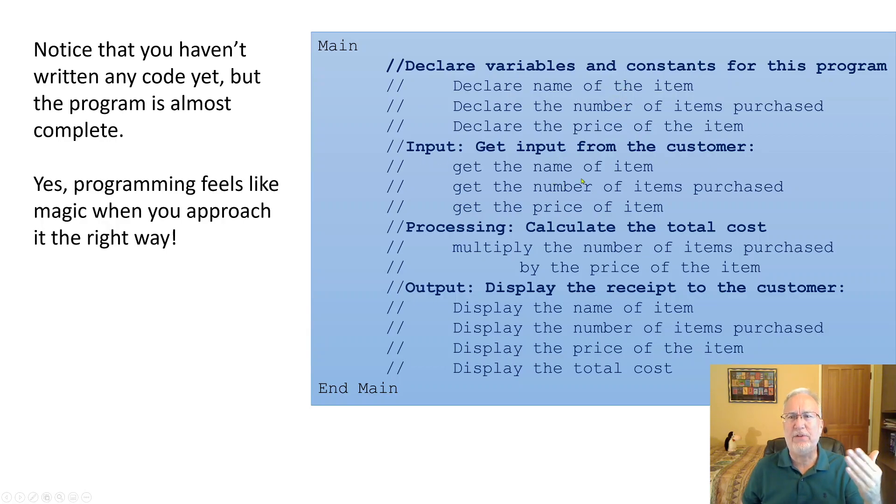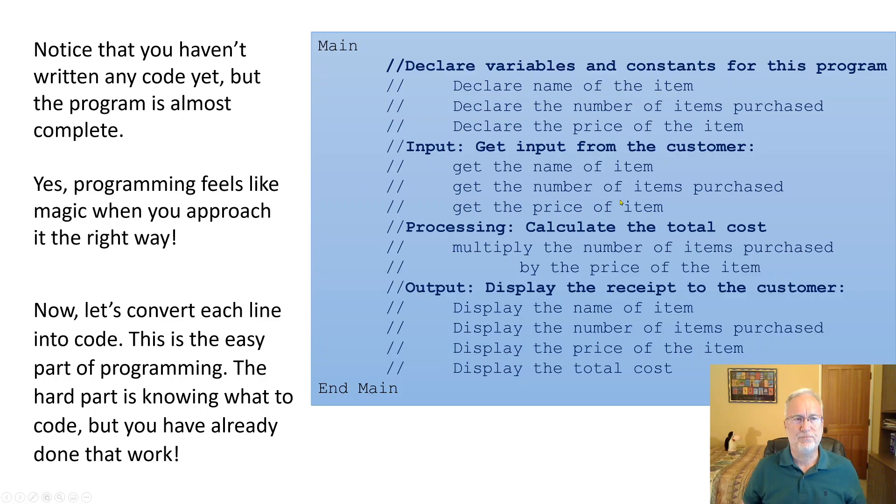Input: what input we have to get. We have to get the name of the item, the number of items purchased, and the price of the item. So we got all these things there. Processing: what do we have to do? Multiply the number of items purchased by the price of the item, and we have to display all four items. We already talked about that.